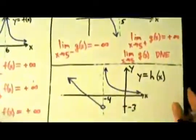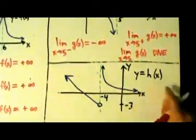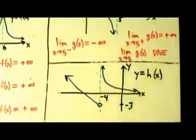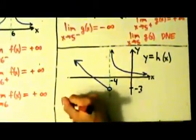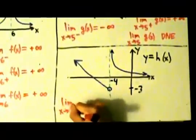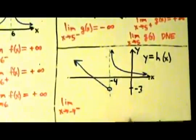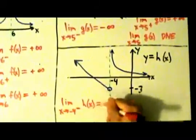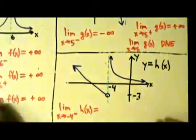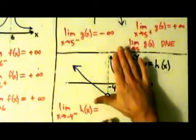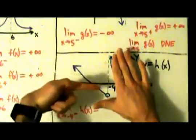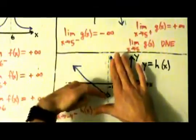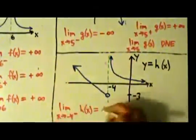Let's take a look at one more example. Here's a goofy-looking function, y equals h of x. Vertical asymptote at x equals negative 4, so we're probably going to have an infinite limit here. The limit as x approaches negative 4 from the left of h of x equals what? Well, if we're just approaching from the left, we don't care what's happening on the right. We're coming into negative 4 from the left. What's happening to the y values? They're getting closer and closer to negative 3. So this is negative 3.